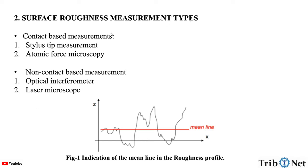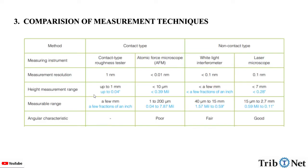Surface roughness measurements are of two types: contact-based measurement and non-contact-based measurement. In contact-based, there are stylus tip measurement and atomic force microscopy. In non-contact-based measurement, there is optical interferometer and laser microscope.